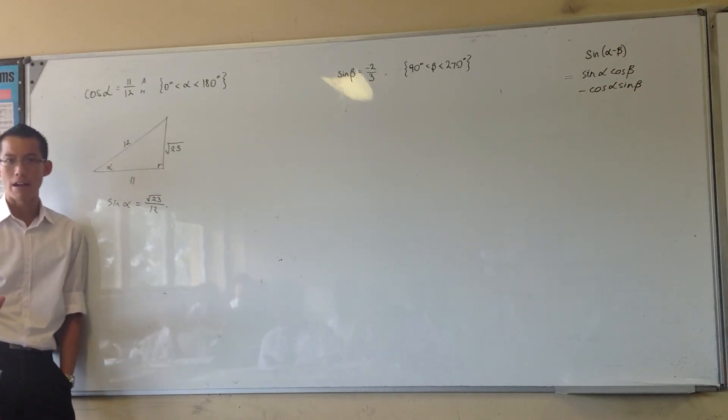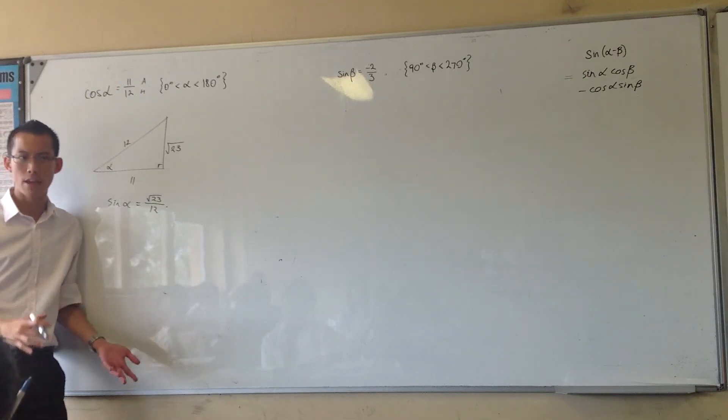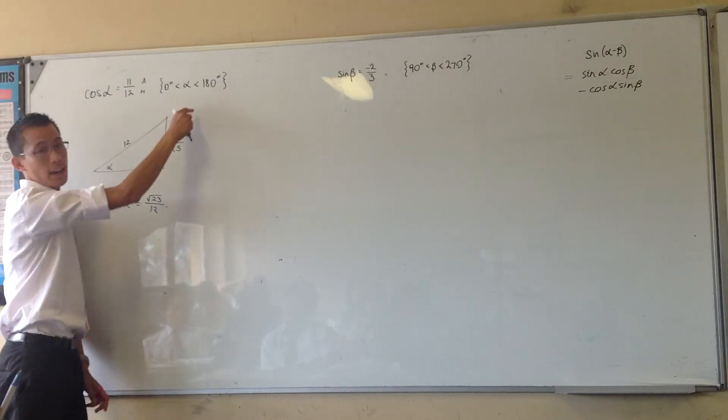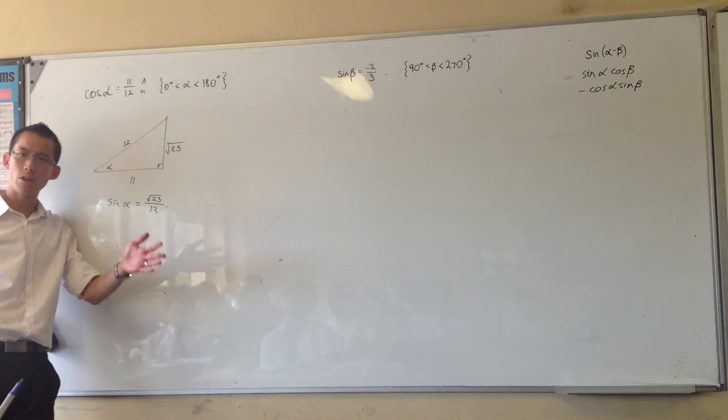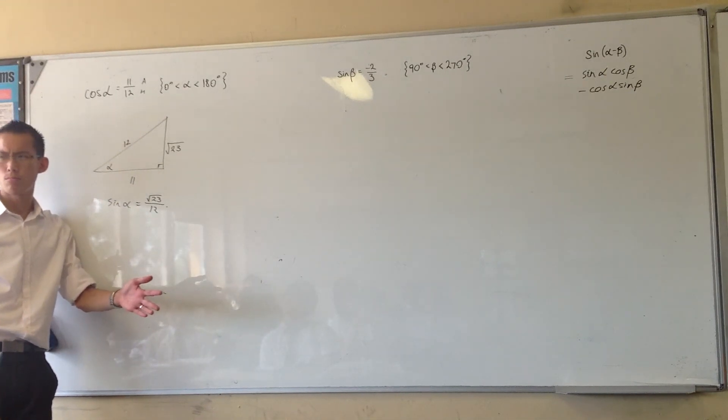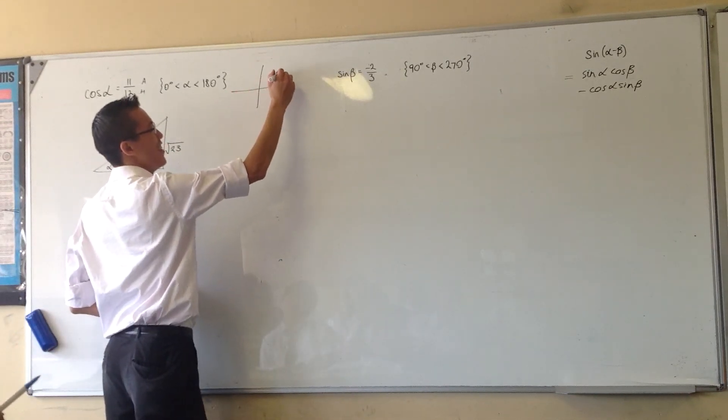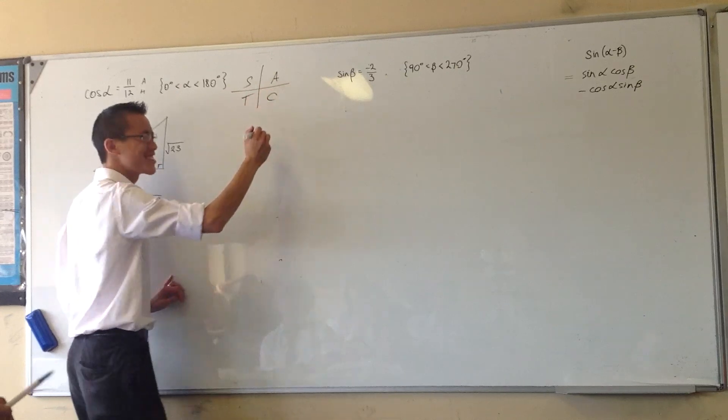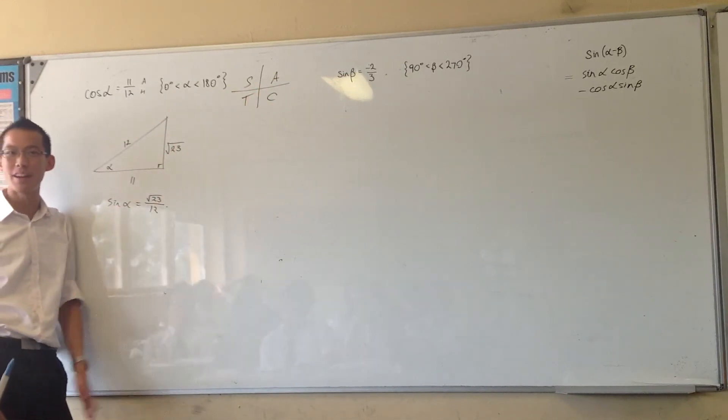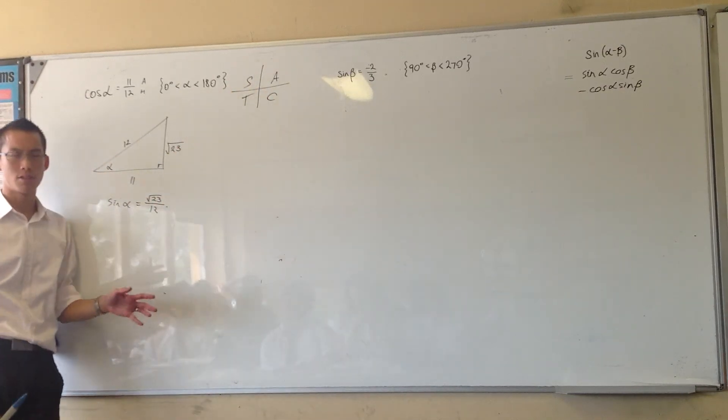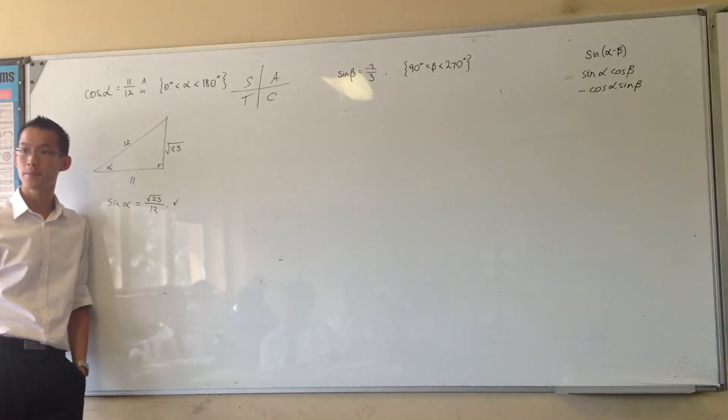Now before you leave off, you have to be careful. You get a value, but when you've got restrictions on domain, you always need to be careful. So you look at this and then you check it. Now between 0 and 180, which quadrants is that? It's 1 and 2. So in quadrants 1 and 2, sine is positive. So far so good.